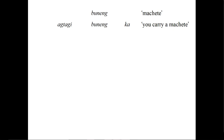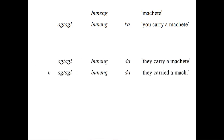So here's that exhaustive tutorial. We have buneng, which we can break into ag tagi, buneng, and ka — so ag tagi and ka probably mean 'you' or 'carry.' Then we have ag tagi buneng da further down. Comparing ag tagi buneng ka with ag tagi buneng da, the only difference is ka versus da. The meaning changed from 'you' to 'they,' so we can say ka means 'you' and da means 'they.'